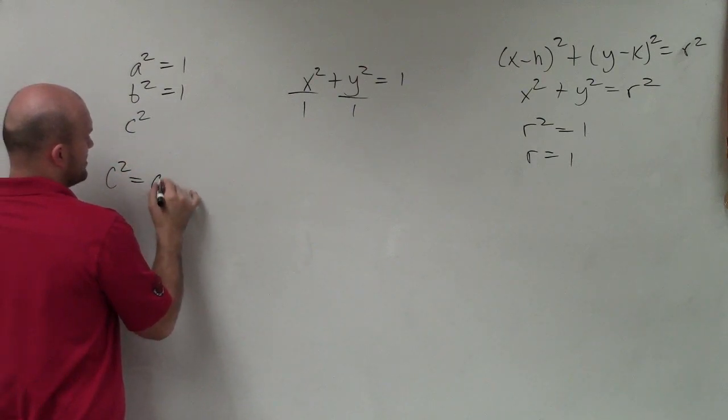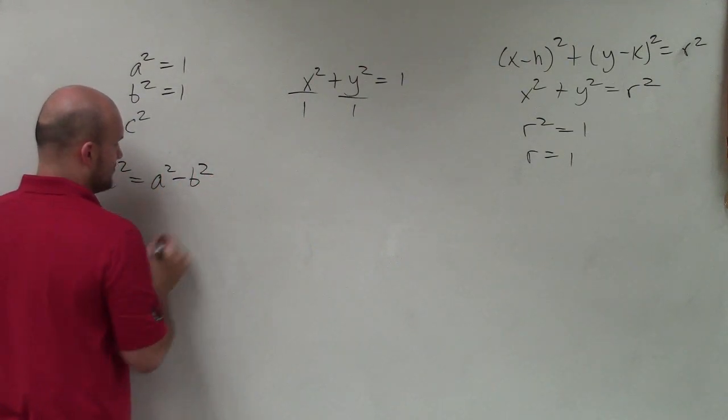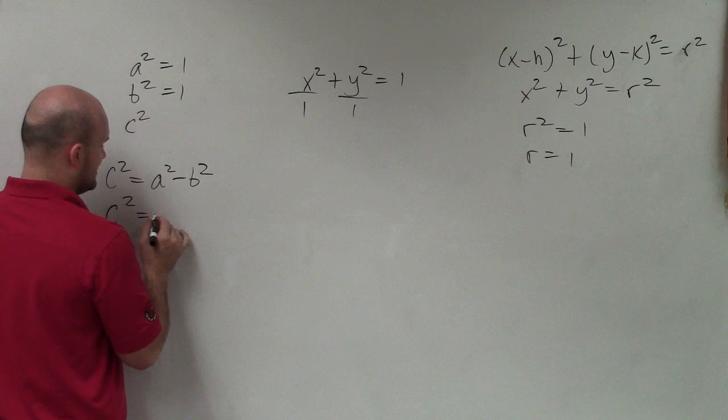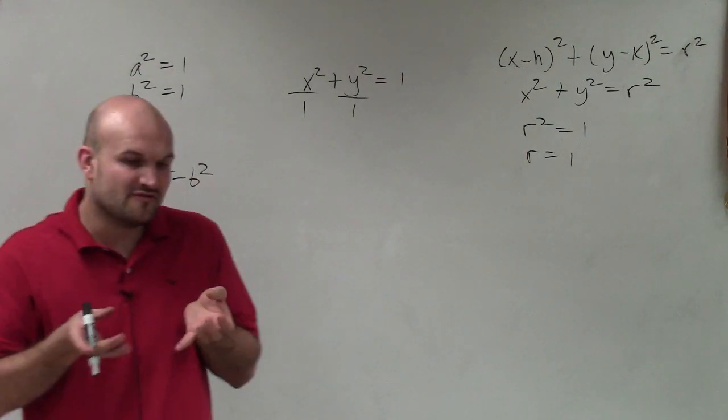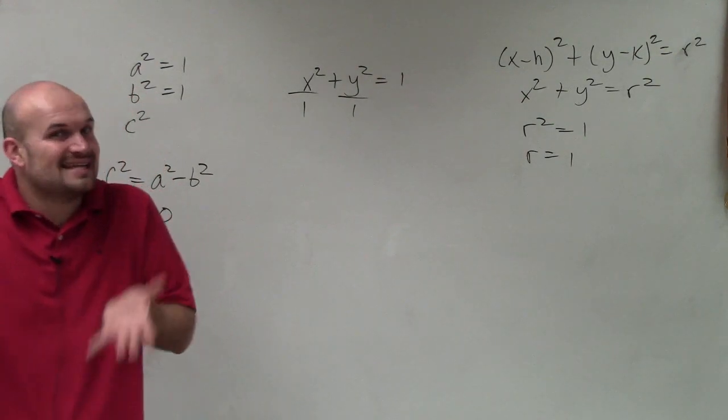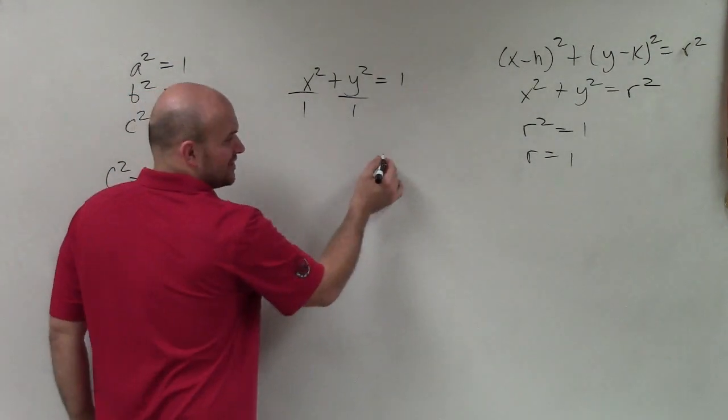c squared equals a squared minus b squared, which in this case, c squared is equal to 0. Therefore, our foci are exactly at the center, which is kind of cool.